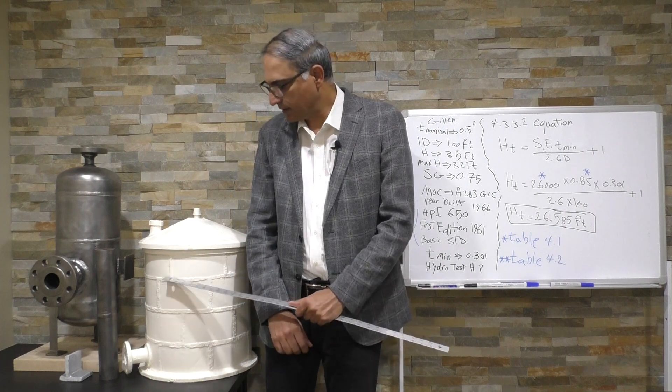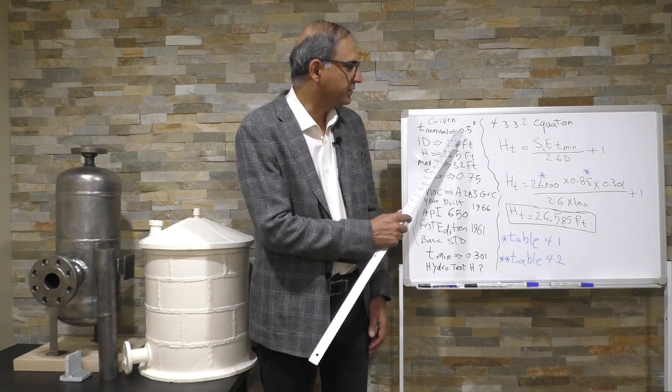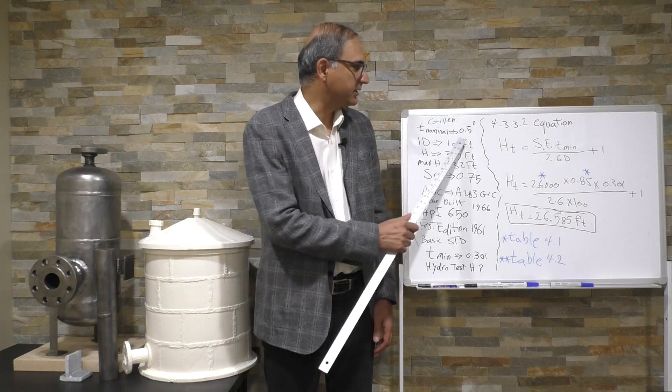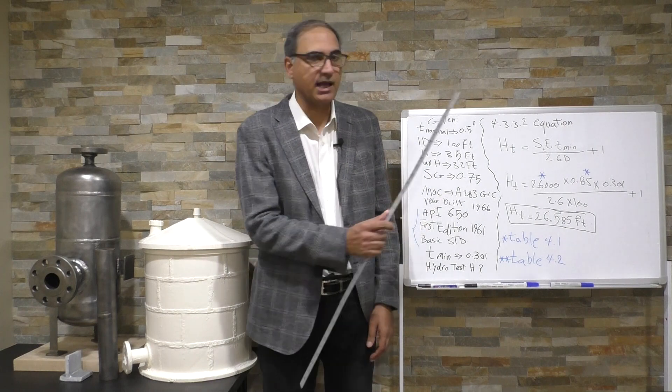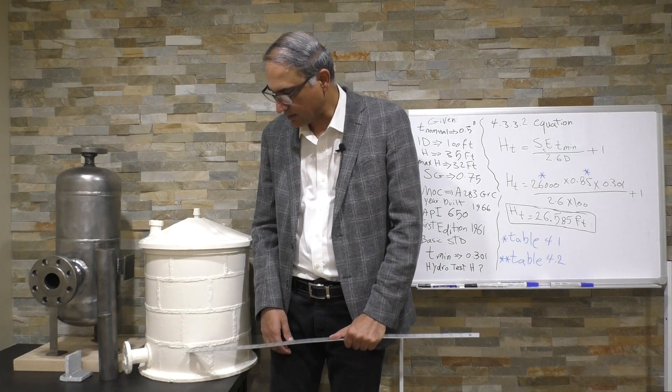So we have a demo storage tank in here, and our given for this problem is that our nominal thickness for first shell course is half inch, so it means for this first shell course is half inch.